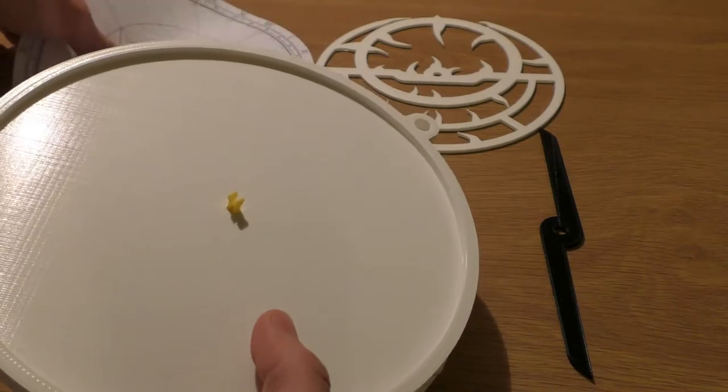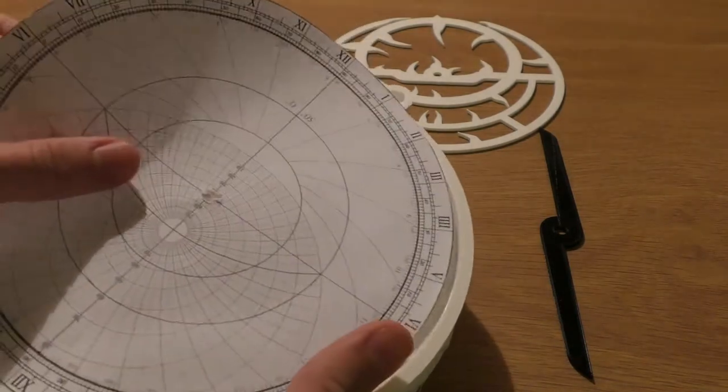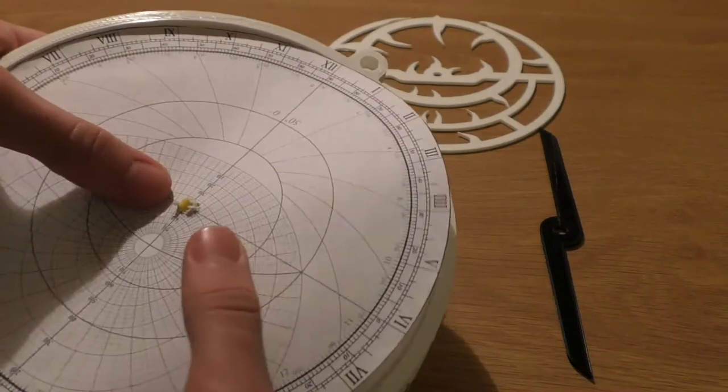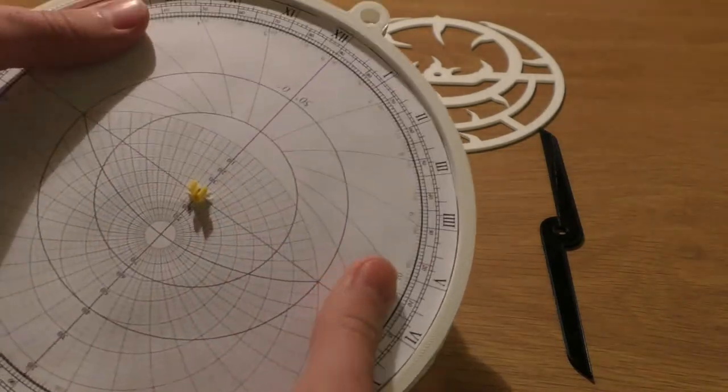The next thing to do is to take the front graduated plate and place it on top of the matter. Make sure to push the connector through the piece of paper.